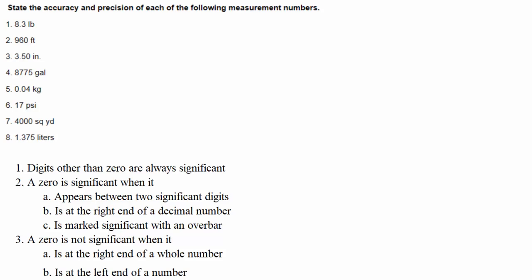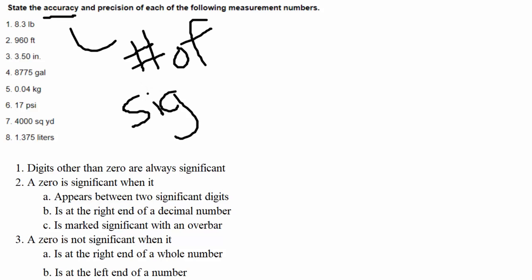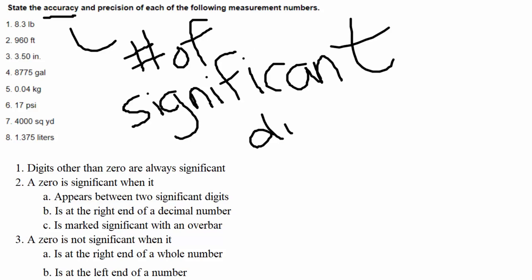Accuracy and precision almost sound like they mean the same thing, but they don't. When it comes to accuracy, accuracy deals with the number of significant digits you have in a given number. So if I'm given a number that has five digits in it, how many of those are actually significant? That's what we're talking about when it comes to accuracy. So then we need to know: what are significant digits?